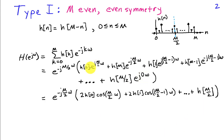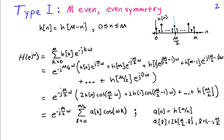Grouping these terms, since H of 0 and H of M are the same number, their combination is just 2 times a cosine. So we write 2 times H_0 cosine of M over 2 omega, plus 2 times H_1 cosine of M over 2 minus 1 omega, and so on, with the last term being H of M over 2 alone. This can be expressed as a weighted sum of harmonically related cosines: the sum from k equals 0 to M over 2 of A_k cosine omega k, where A_0 equals H of M over 2 and A_l equals 2 times H of M over 2 minus l for l from 1 to M over 2.